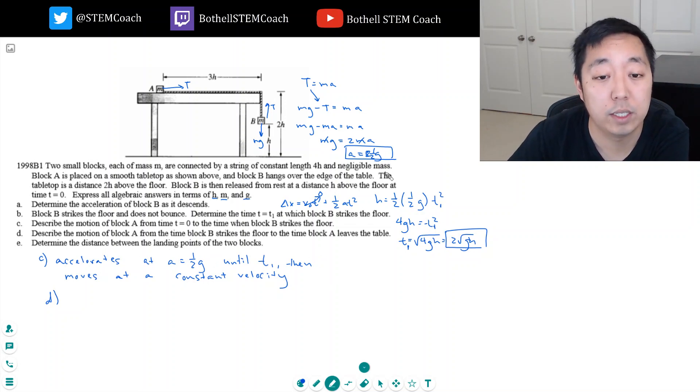He accelerates at one half G for this amount of time, so his final velocity would be V initial plus AT. He has no initial velocity because he starts at rest, so one half G times 2 root H over G. These two cancel, so his final velocity would be root GH. Part D: describe the motion of block A from the time block B strikes the floor to the time block A leaves the table. Now he's moving at a constant velocity of root GH.